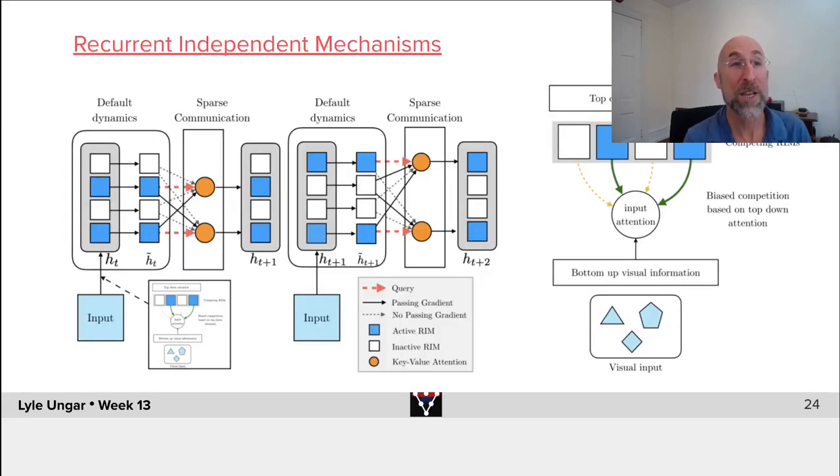One of the many approaches to do that is called recurrent independent mechanisms. Yet another approach to try and drive modularity into systems. So imagine, again, something where you're showing your computer a sequence of visual inputs as it watches the world. It's going to then learn in its neural net a set of hidden state, each of which is a module. The trick, which we're going to say, is from time to time, one time step to the next, there'll be a sparse communication.